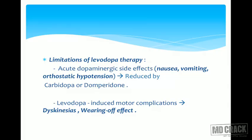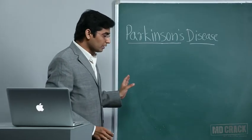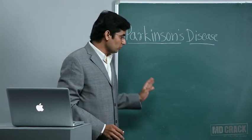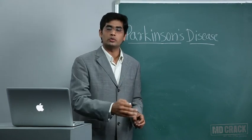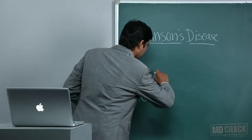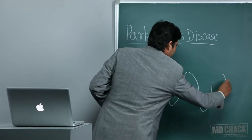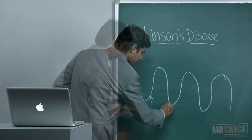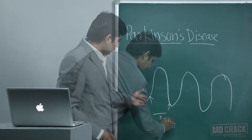Limitations of levodopa therapy: common side effects are nausea, vomiting, and orthostatic hypotension, which are reduced by combining with carbidopa. In late stages, two major problems emerge: dyskinesia and the wearing-off effect. The action of levodopa lasts only 90 to 120 minutes, requiring frequent dosing — perhaps every four hours. The blood level of levodopa keeps changing, which underlies these complications.